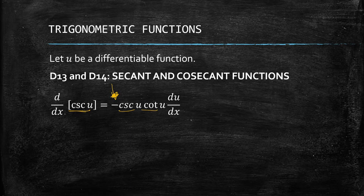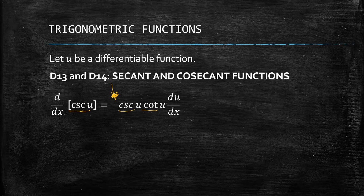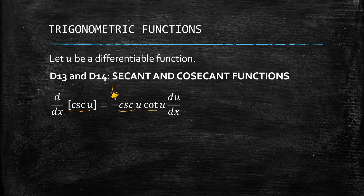If you recall the previous derivatives, negative values appear for cosine, cotangent, and cosecant — so the derivative of cosecant is negative.